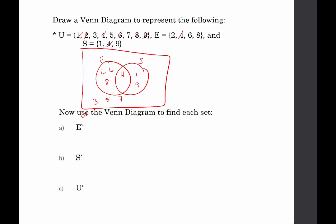Now we're going to use the Venn diagram to find the complement of each set, starting with E complement — all elements not in E. Here is circle E; what's everything not contained in this circle? I see 1, 9, 3, 5, and 7. For S complement, we're looking for everything not contained in set S. What do we see that's not there? There's 2, 6, 8, 3, 5, and 7. So that would be the complement of set S — everything in the universe that's not in set S.